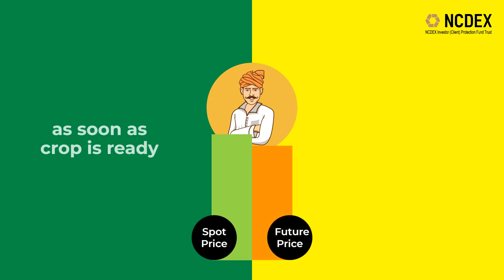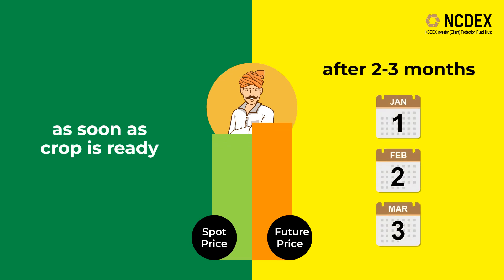Exchanges also help with deciding when to sell. Exchanges provide both spot prices and futures prices. By comparing spot prices and futures prices, farmers can decide whether to sell as soon as the crop is ready or sell through the exchange after two to three months.